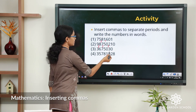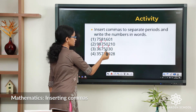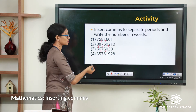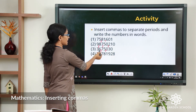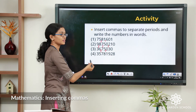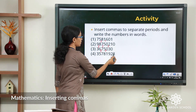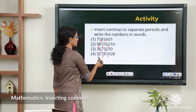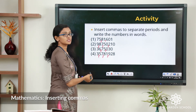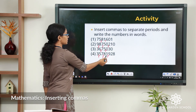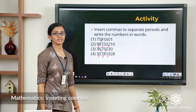The third one: ones, tens, hundreds — comma — thousands, ten thousands — comma — then lakhs and ten lakhs. This one will be 36 lakhs 75,030. The fourth one: ones, tens, hundreds — thousands, ten thousands — lakh, ten lakh. This is 3 crore 57 lakhs 81,928. I hope all the answers are correct.